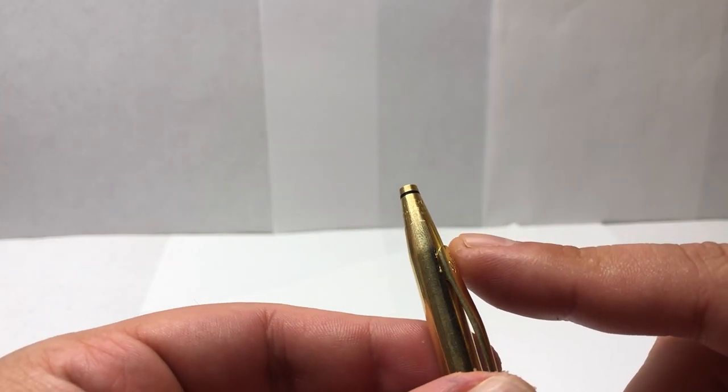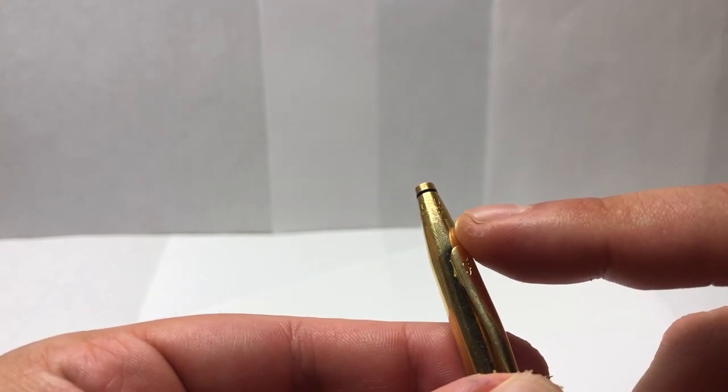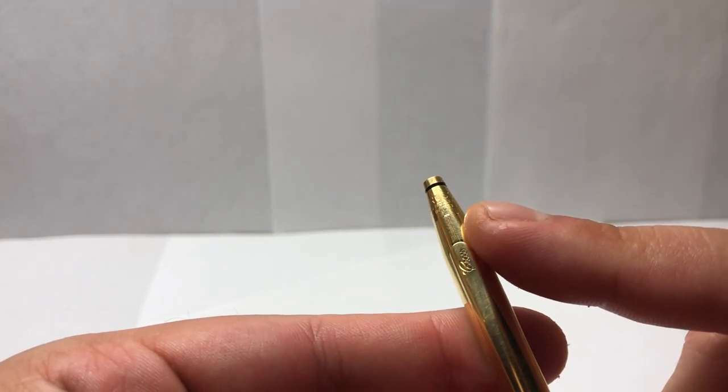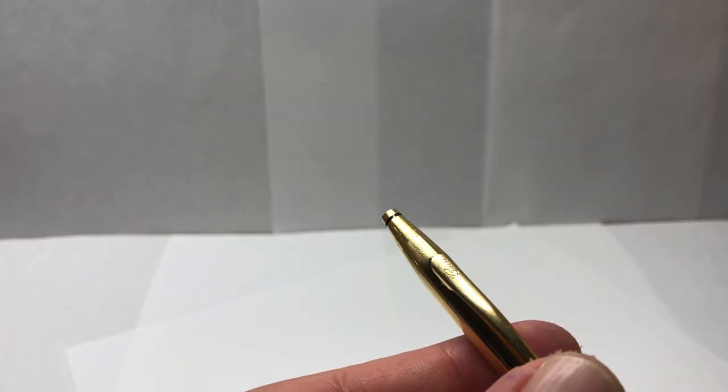And then we have over here the marking we notice. This is Cross 1/20 18 carat roll gold.